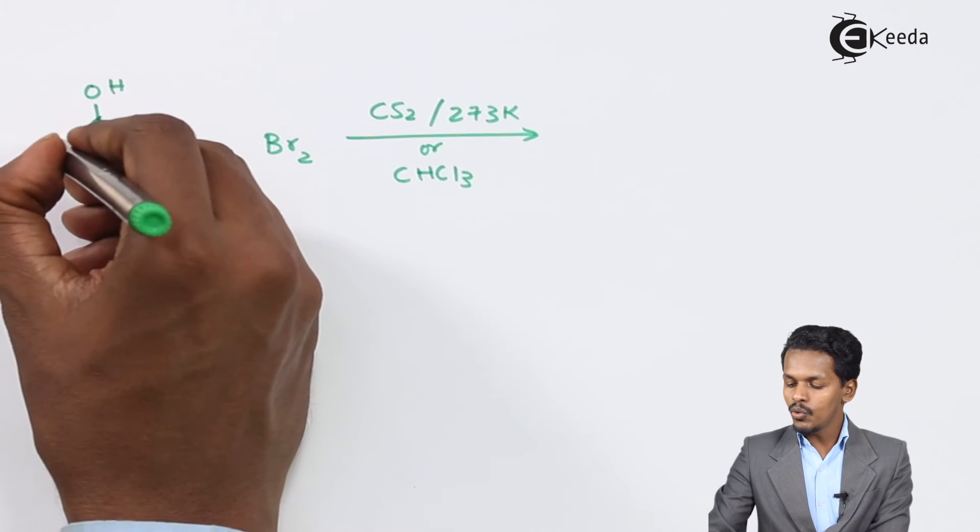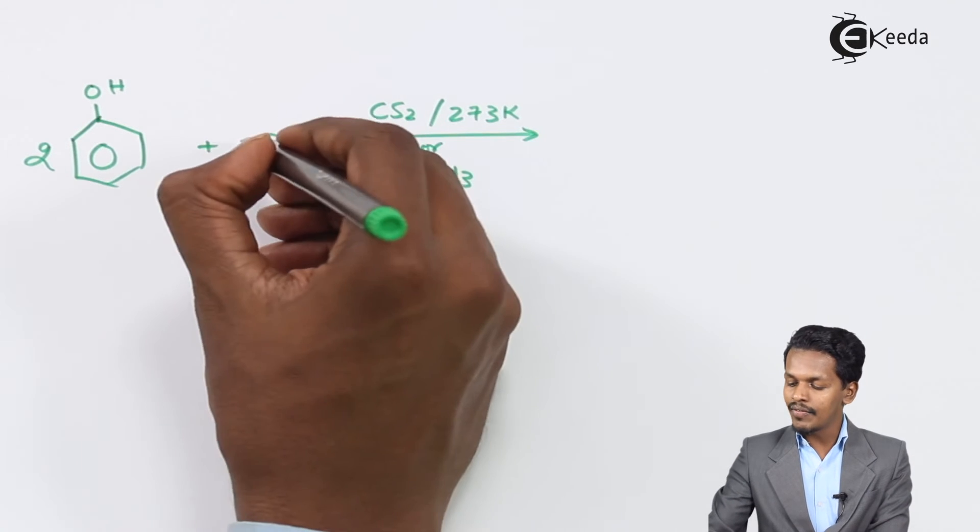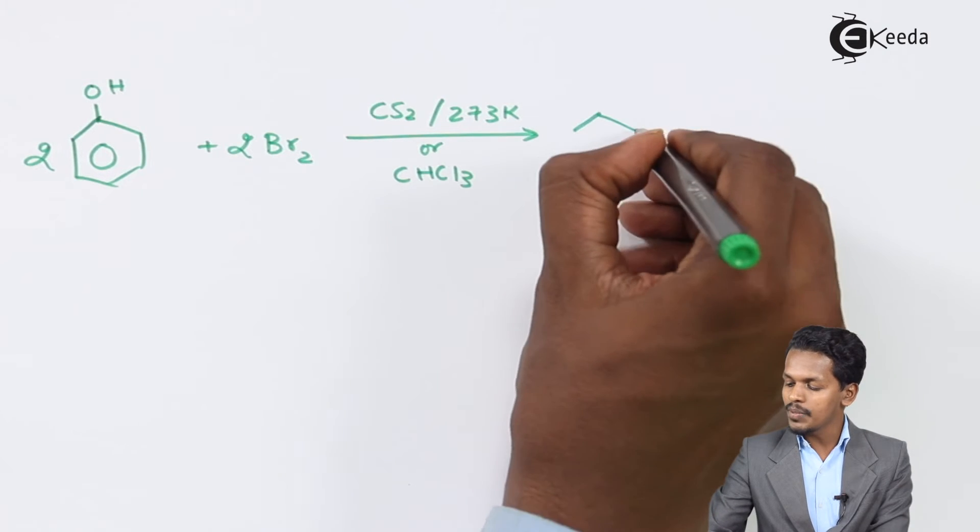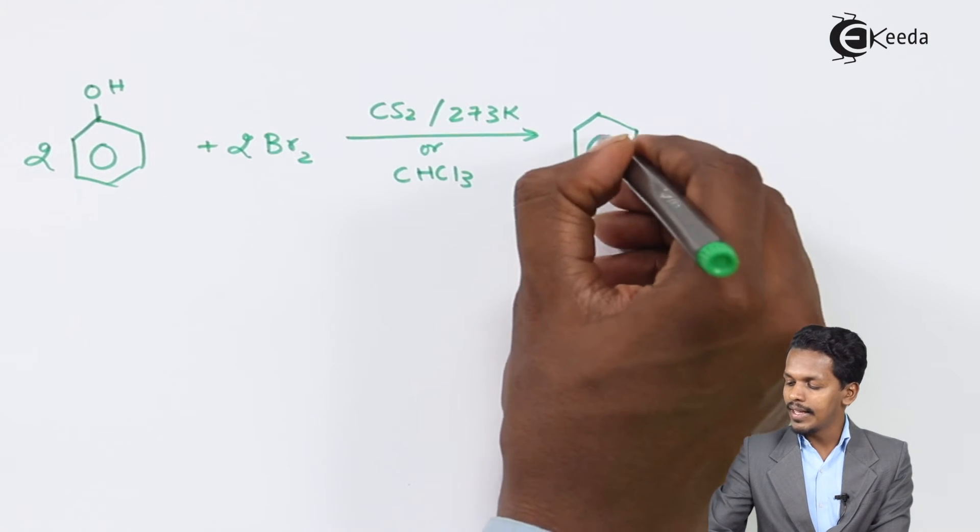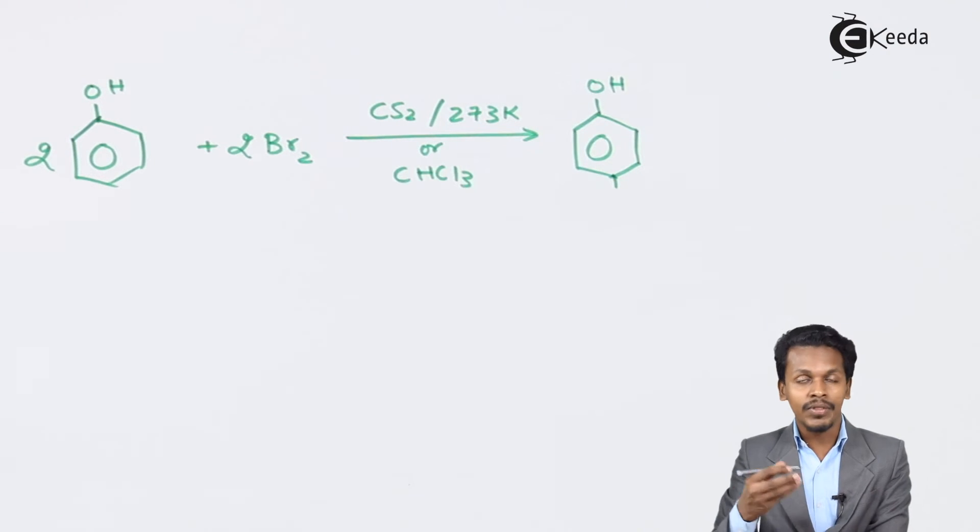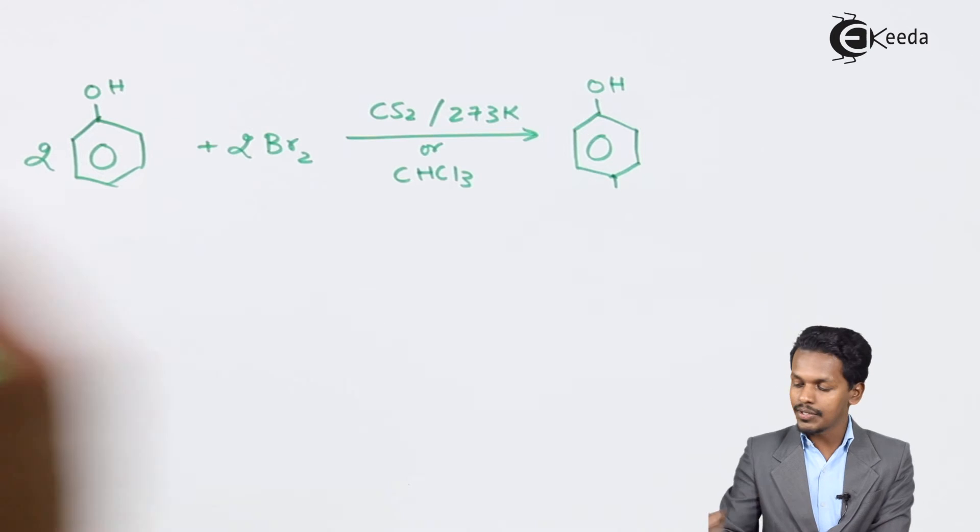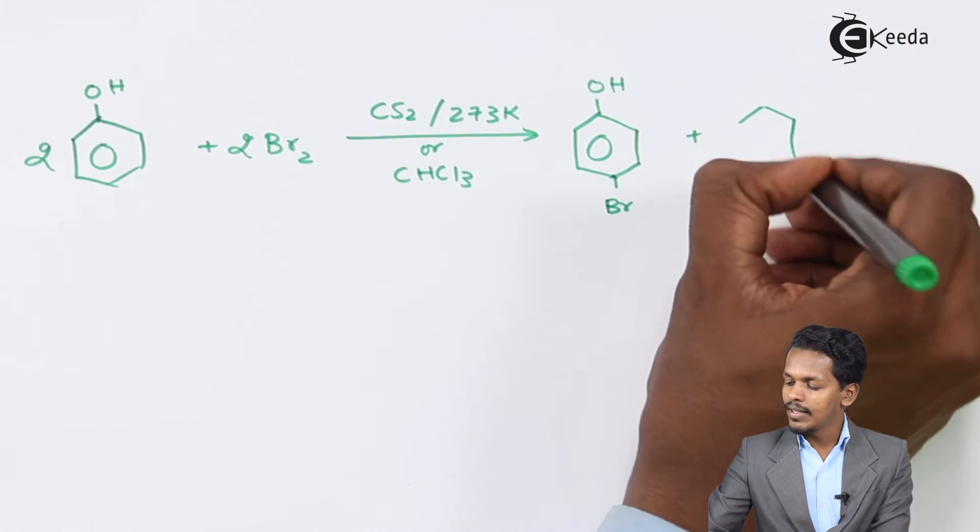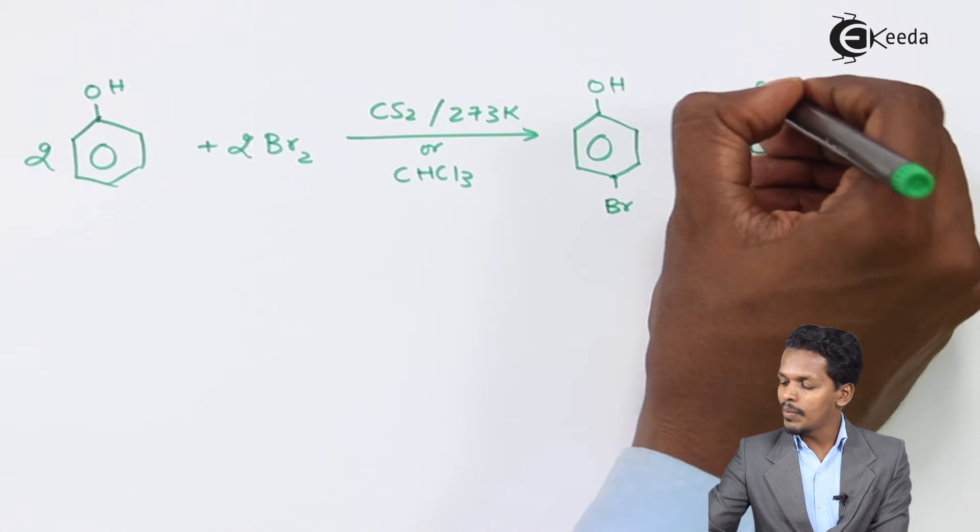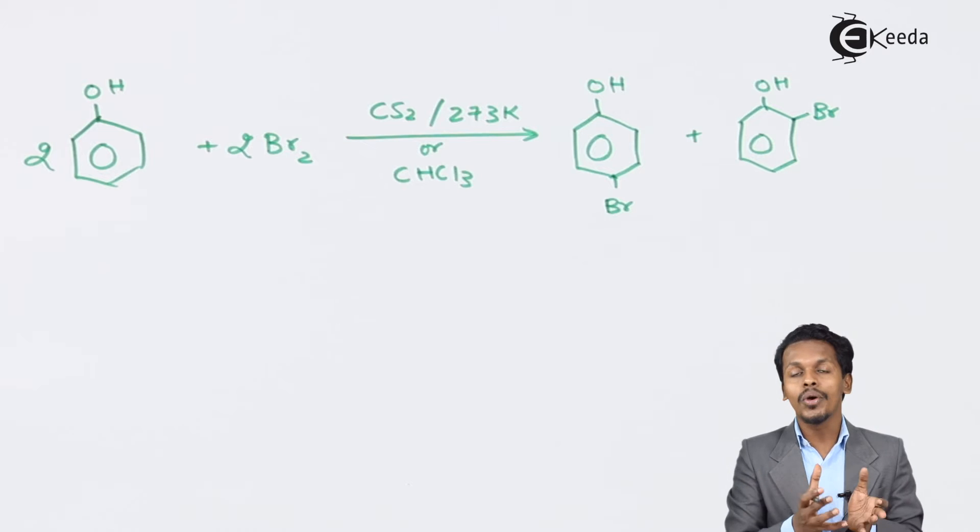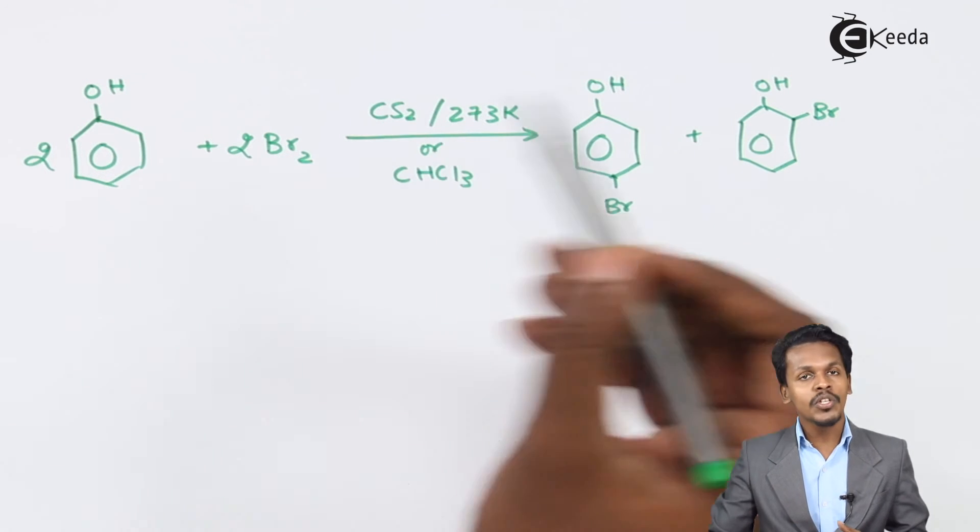So in this case two molecules of phenol will react with two molecules of bromine molecule, and the possible products that we could get over here is phenol on which the bromine would be attached on the ortho position and on the para position. So there would be a product where the bromine is attached on the ortho position with respect to the OH that is attached to the carbon atom of the benzene ring. So therefore there are two possible products.